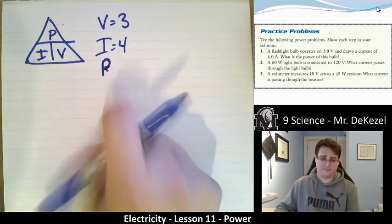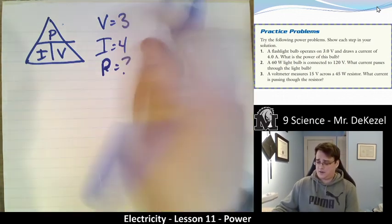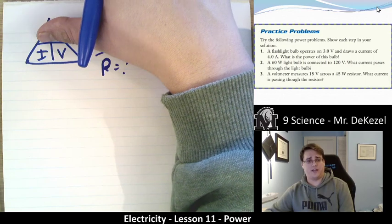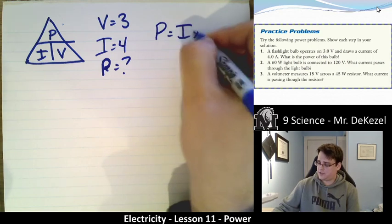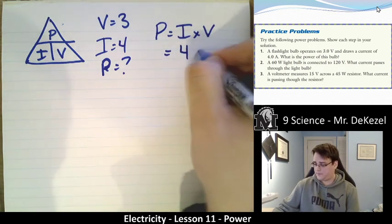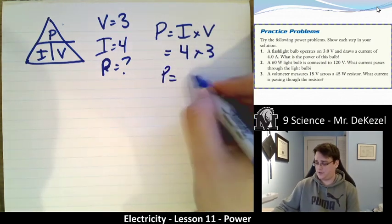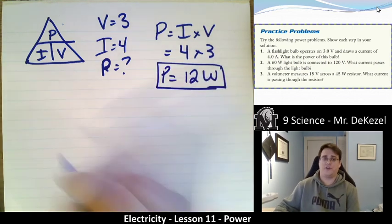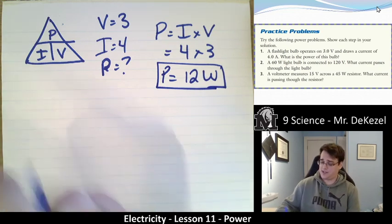I'm so used to drawing an R. That should be a P. Power is our question mark. So if we cover up power, that means that we are looking at multiplying current and voltage because they're on the same level. So power is equal to current times voltage, which is equal to four times three. The power we would use would be 12, and that is 12 watts. That is our unit for power. Power is 12 watts. That is question one.